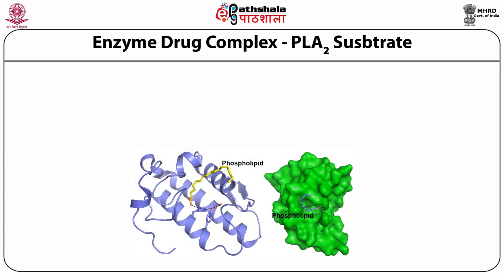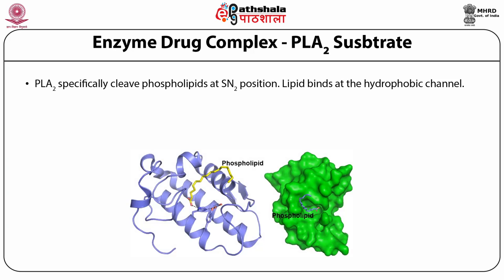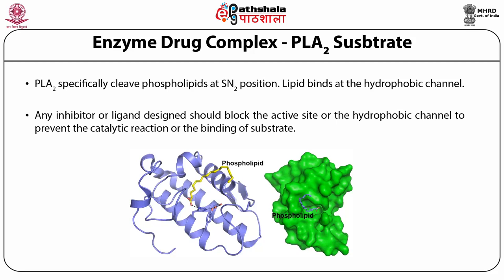Enzyme-drug complex with PLA2 and substrate: PLA2 specifically cleaves phospholipids at the SN2 position. The lipid binds at the hydrophobic channel. In this figure you see PLA2 along with the lipid shown in sticks in green color. The active site amino acids — histidine, aspartic acid, and tyrosine — are shown. The lipids interact with aspartic acid and histidine; that's how the catalytic reaction happens. On the right side you see a surface representation showing that the lipid binds in the hydrophobic cavity of PLA2. Any inhibitor or ligand design should block the active site or hydrophobic channel to prevent the catalytic reaction or substrate binding.